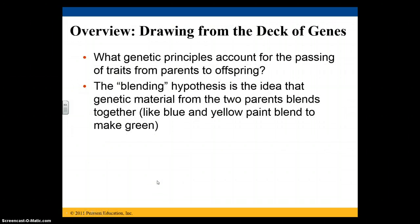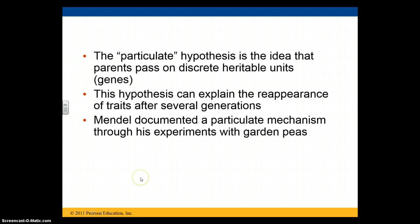We need to understand what genetic principles are going to account for the passing of traits from our parents to offspring. People once had no idea how offspring looked like their parents. The blending hypothesis is the idea that genetic material from both parents blends together, kind of like when you mix two paint colors. There was another hypothesis — the particulate hypothesis — that said there were discrete heritable units passed on from parents to offspring. We now know those heritable units are actually genes.